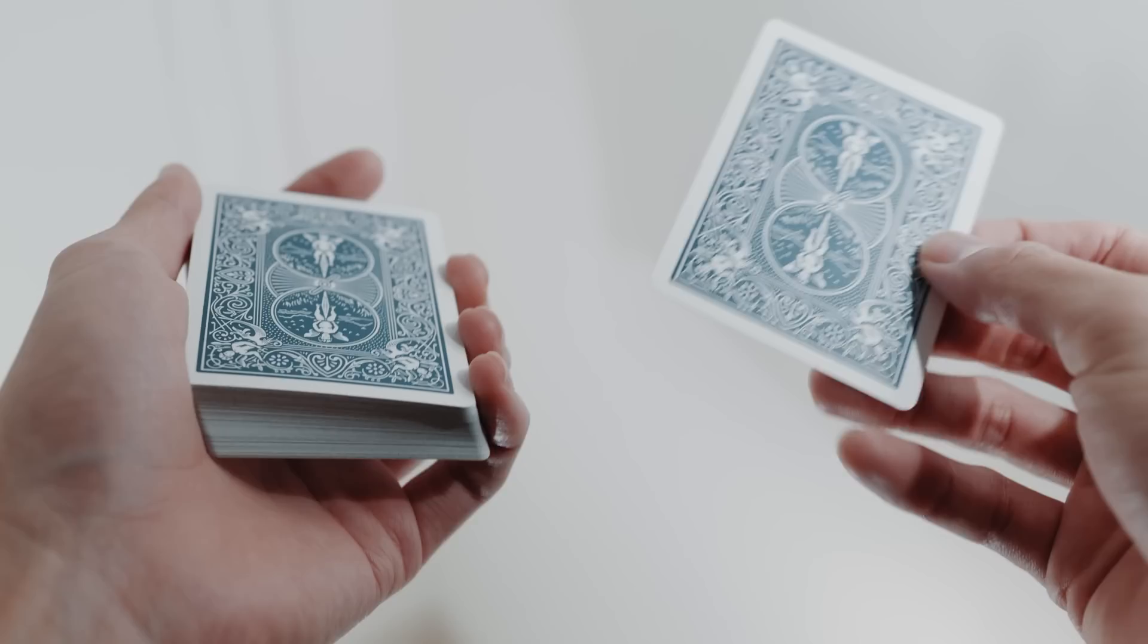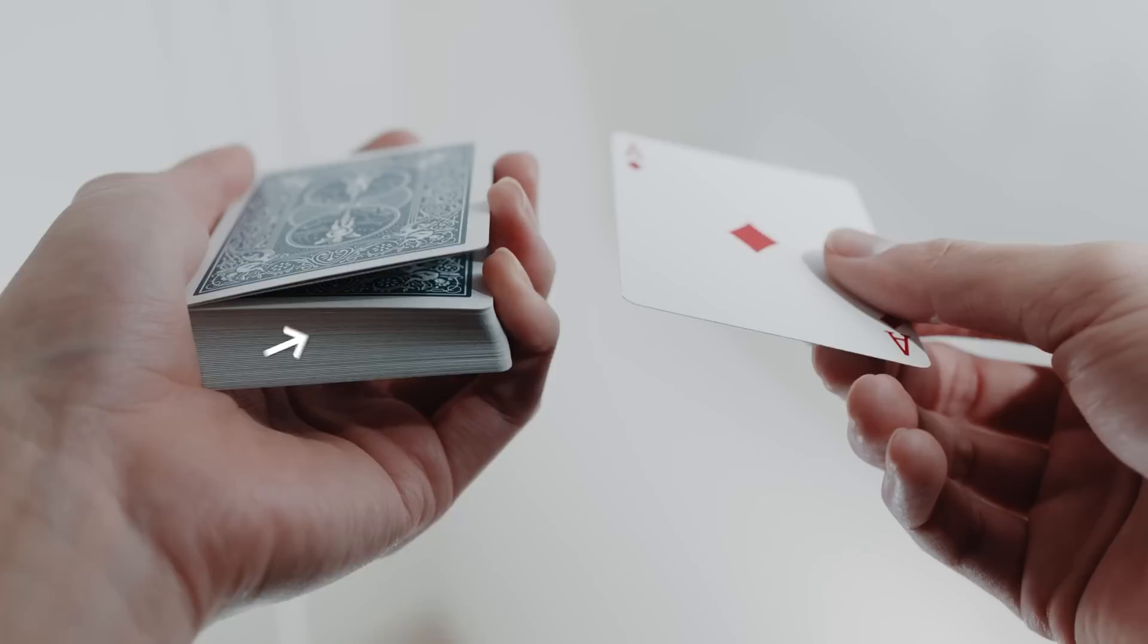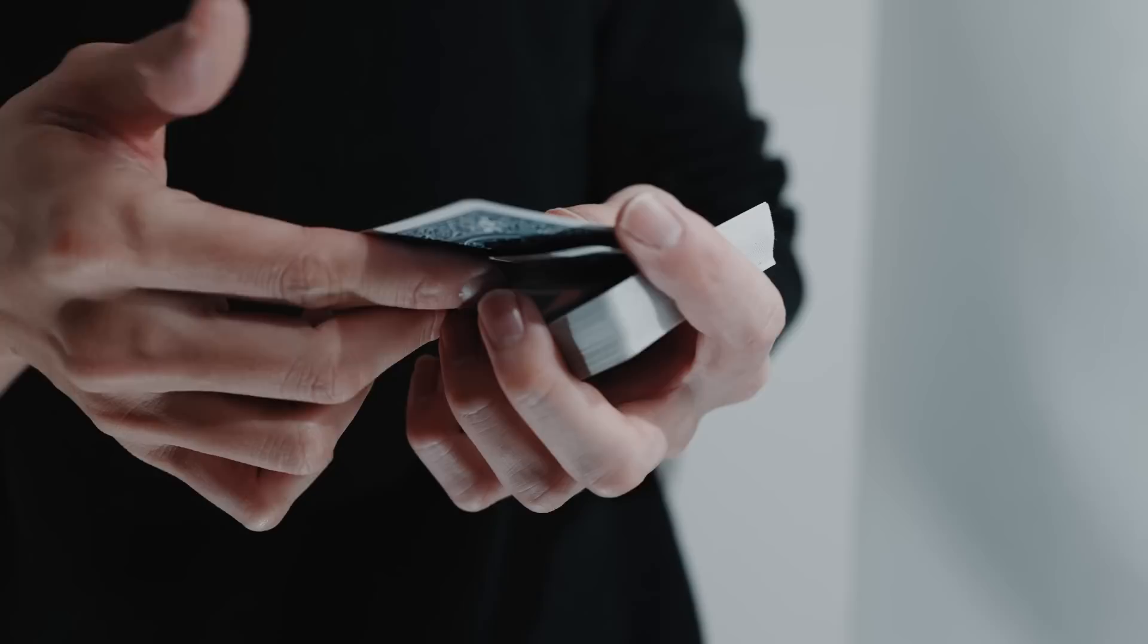Now we need to do the card switch. Take the top card off the deck facing up. And as you do this, perform another pinky count under the top two cards in the deck. Replace the top card onto the deck, but keep it out jogged as shown. This means under the cover of the out jogged card, you can use your fingers to drag the bottom card sideways under the ace of diamonds.